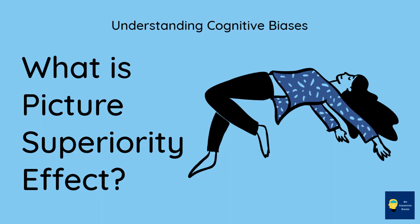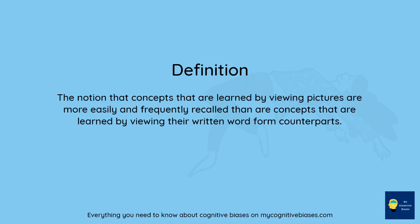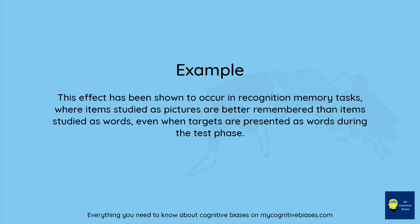What is the picture superiority effect? The notion that concepts learned by viewing pictures are more easily and frequently recalled than concepts learned by viewing their written word form counterparts. This effect has been shown to occur in recognition memory tasks, where items studied as pictures are better remembered than items studied as words, even when targets are presented as words during the test phase.